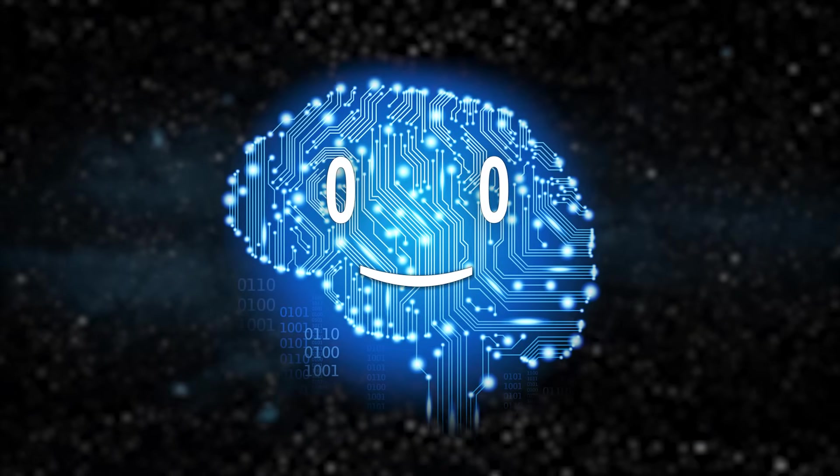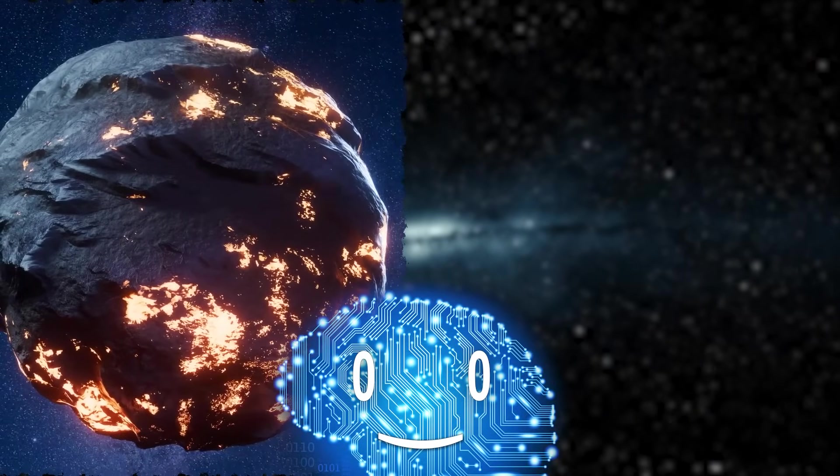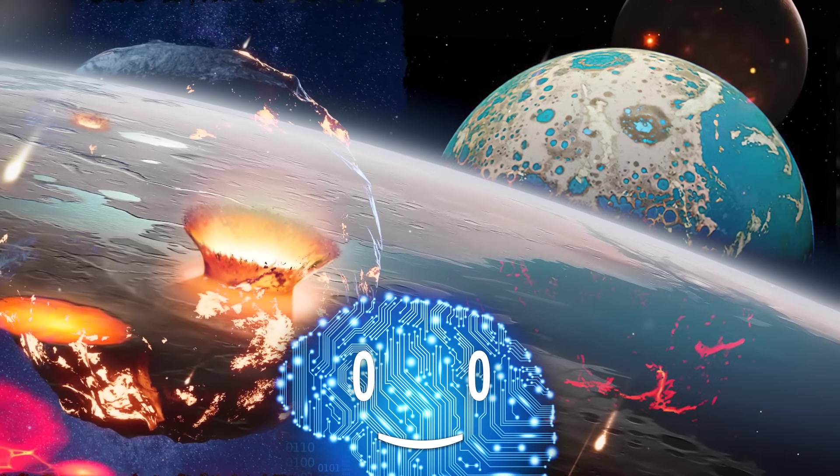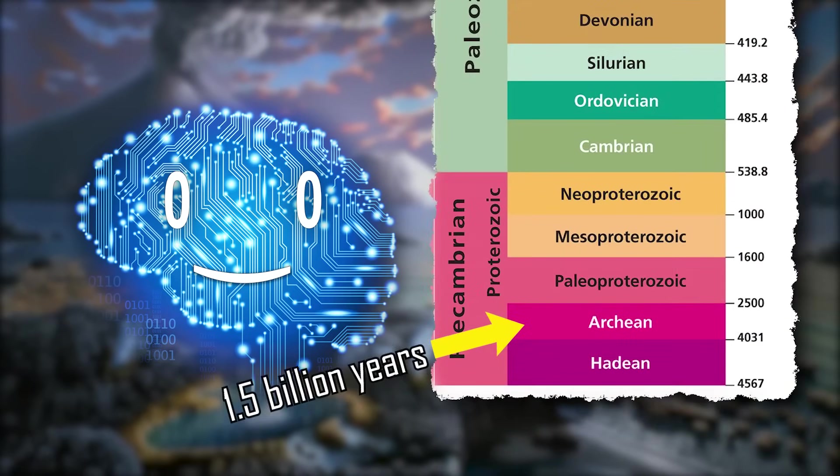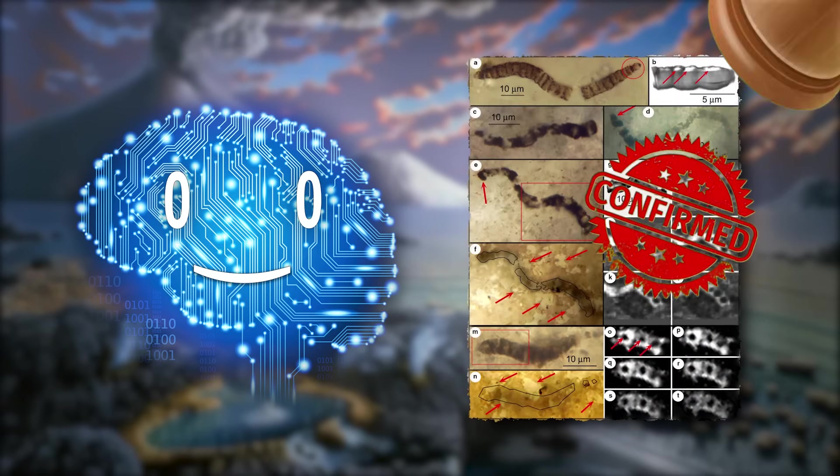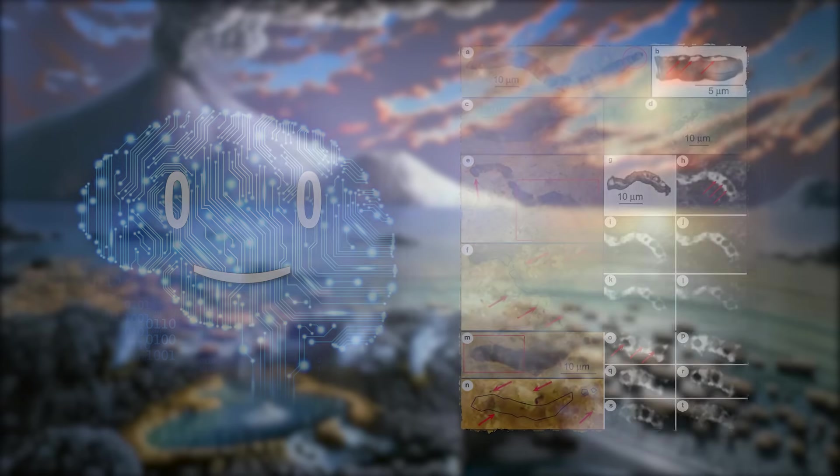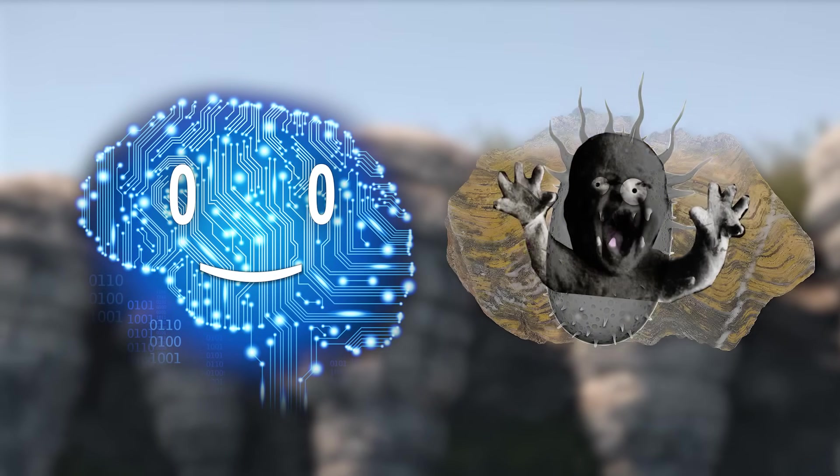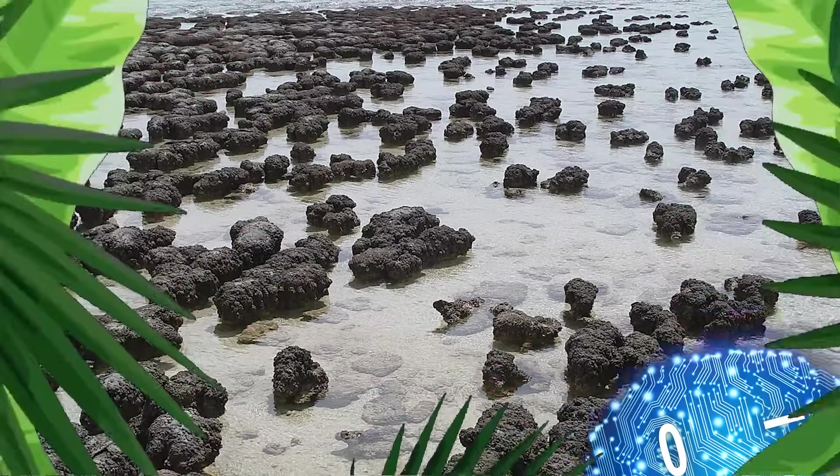The Hadean Eon lasted 600 million years, starting with the formation of the planet and ending with the formation of a stable crust after the worst of the asteroid bombardment was over 4 billion years ago. What followed was 1.5 billion years of the Archean Eon, in which the confirmed earliest known life emerged as single-celled organisms. Proof of that are Archean stromatolites, which are essentially fossilized remains of bacterial mats from that period, found in places like Western Australia.